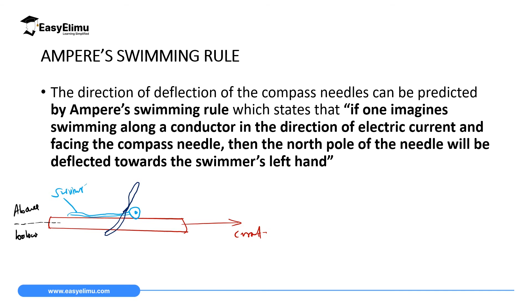So if the swimmer is above this wire, which is carrying current in the same direction where he's swimming to. Now if you have a compass needle below this swimmer, I'm going to draw a compass needle with a north pole and south pole. So if you have a compass needle like this one here, this compass needle has the arrow which is the north pole, colored. This is north pole and south pole. And this needle is below the conductor where the swimmer is swimming on top.